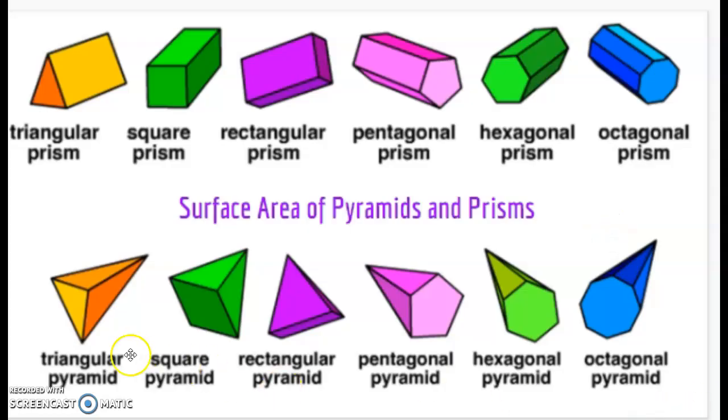If we look at pyramids in the bottom row, all of these are pyramids. And what makes a pyramid different than a prism is that you can see on every single shape you see triangles. You also notice that all the triangles come to a point. So in each of the shape, you have a point where all triangles meet.